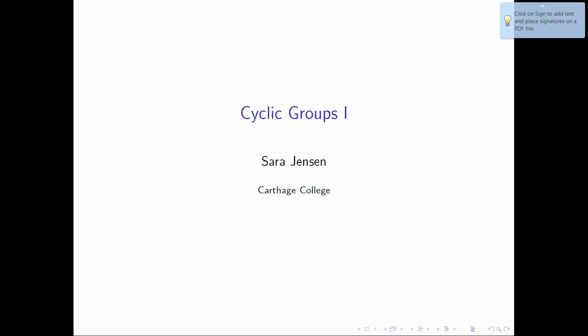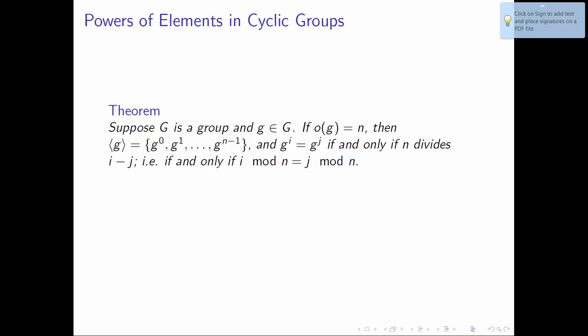In this video we're going to cover the proof of one important theorem for cyclic groups. The theorem is as follows: suppose G is a group and g is an element of G. We're going to look at the group generated by g, assuming the order of g is finite, say of order n. What we want to show is that the group generated by g — which in theory should be the set of all integer powers of g — is actually equal to the set {g⁰, g¹, ..., gⁿ⁻¹}.